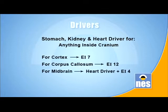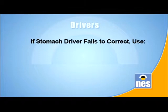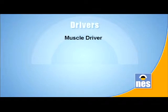Stomach Driver, Kidney Driver and Heart Driver should always be remembered for anything inside the cranium. For the cortex, always think of Integrator 7. For corpus callosum, always think of Integrator 12. For the midbrain, think of Heart Driver and Integrator 4. And here's a tip: if the Stomach Driver simply won't come right after months of treatment, it's a possibility you need to treat Kidney Driver - they have a sort of seesaw effect on each other.